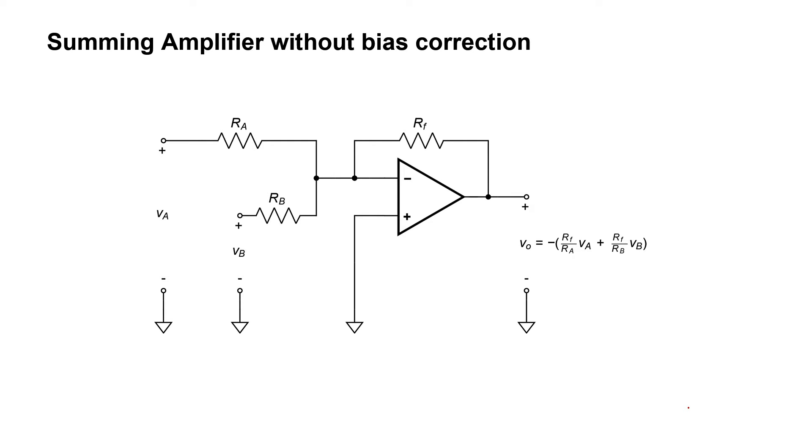For example, if we want to know what voltage VA plus voltage VB is, but we don't want to affect either of those two voltages too much, then we can use a summing amplifier. You can see here that in our formula for the output voltage, we have VA plus VB, and we have controllable constants in front of both VA and VB.